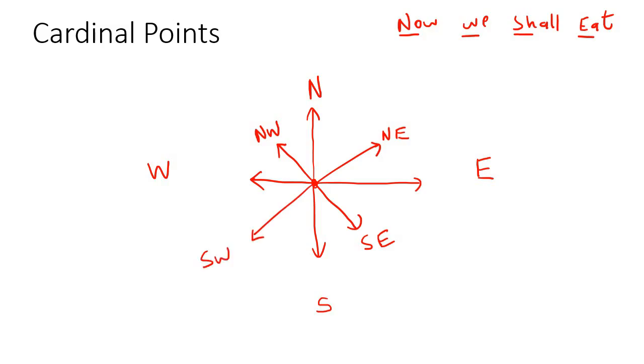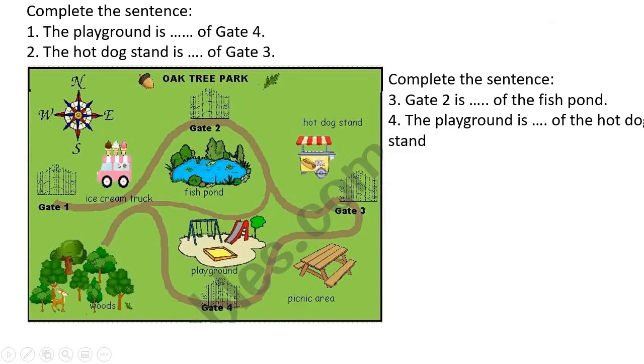So those are the one, two, three, four, eight main cardinal points that you need to know. Now, we're just going to practice that a little bit. All right. So you should have written that down. But let me just write it down for you anyway. So, now we shall eat.